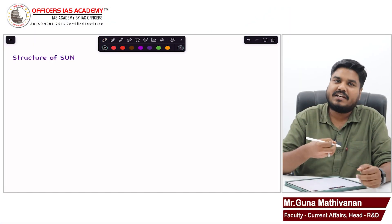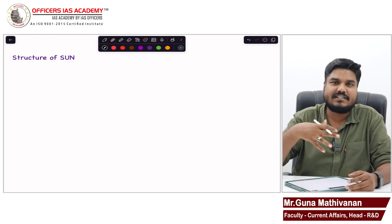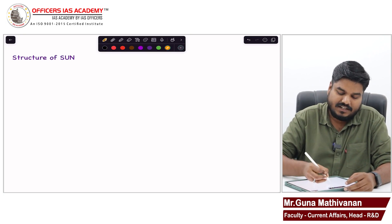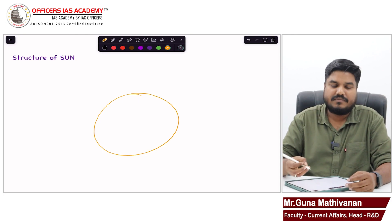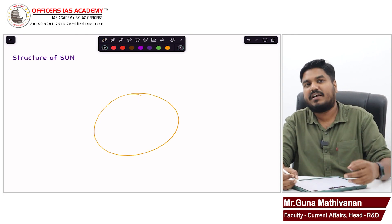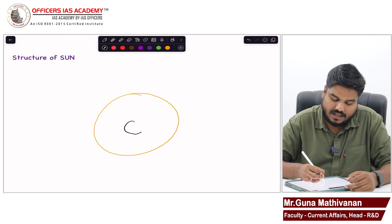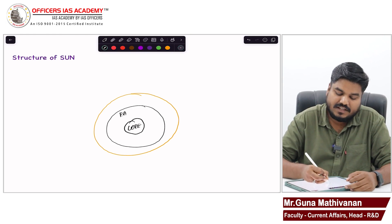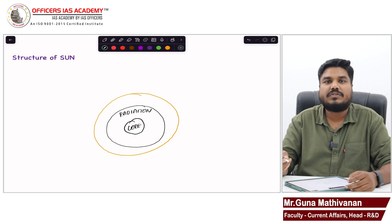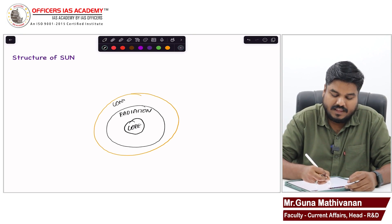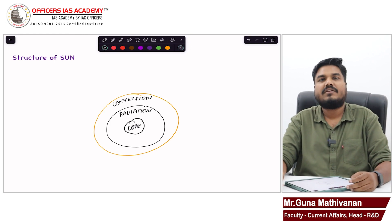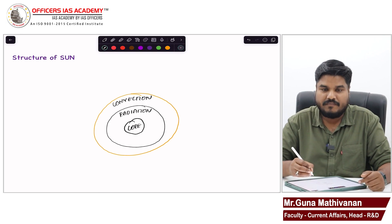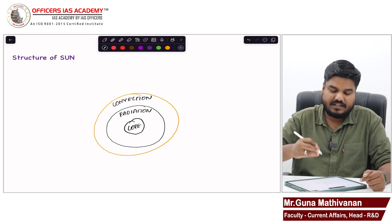Sun's structure is divided into two parts: sun's interior and sun's exterior. The sun's interior is divided into three parts: the innermost part called the core, then the radiation zone, and then the convection zone. So we are dividing the sun into three layers — core, radiation, and convection.